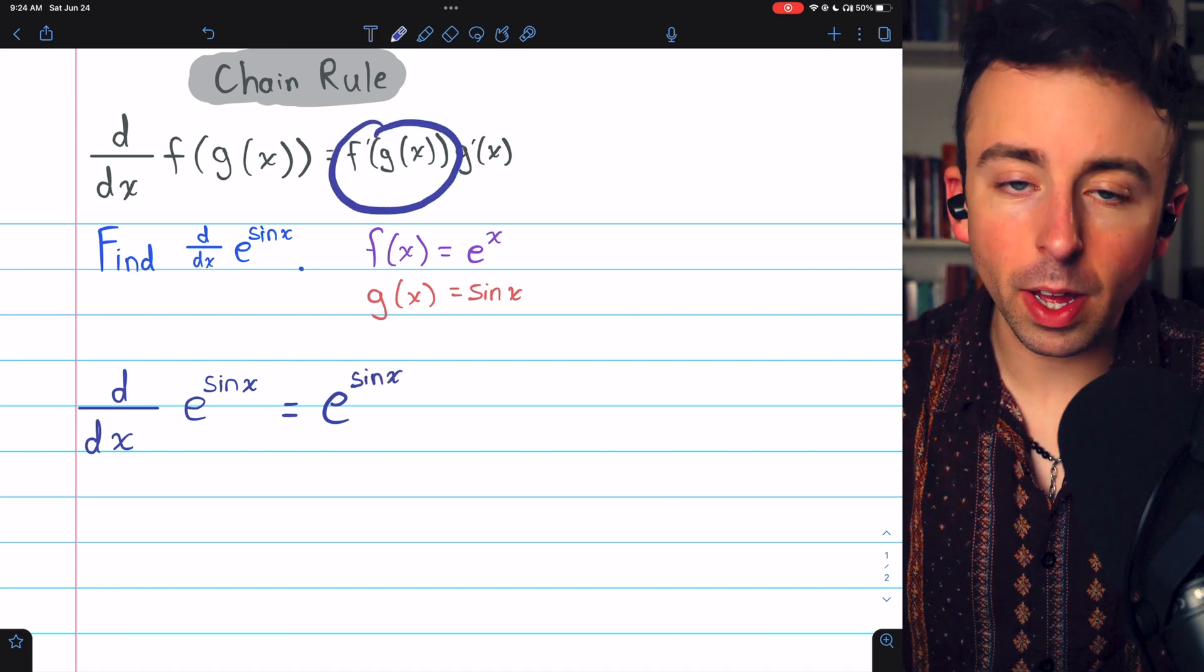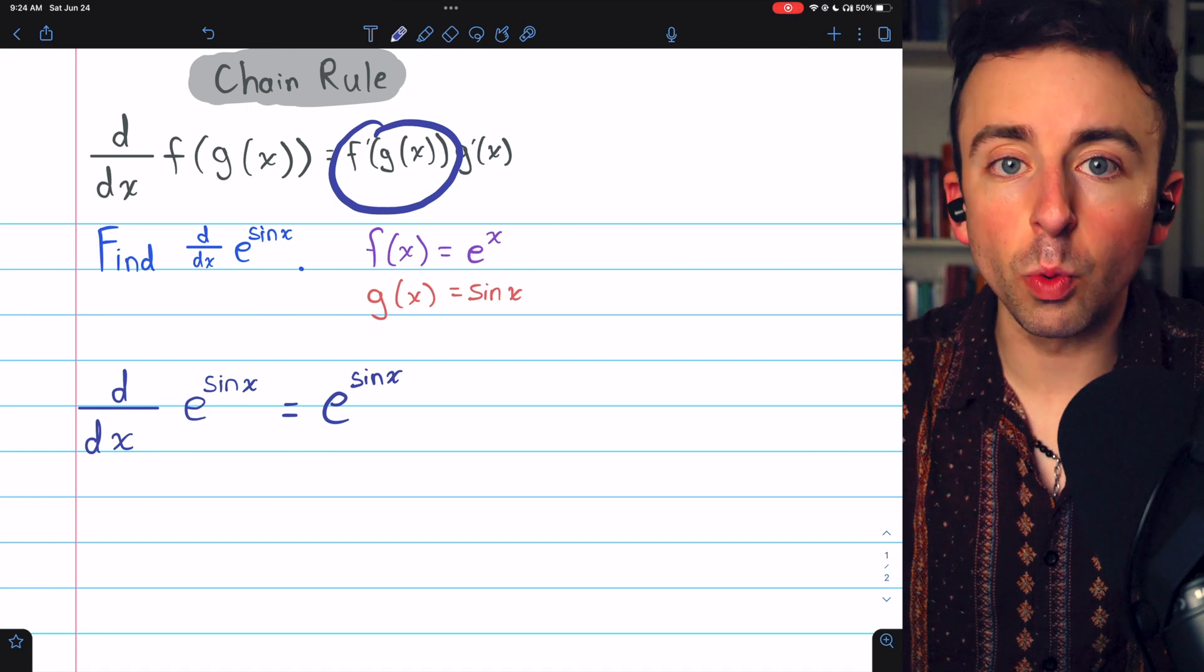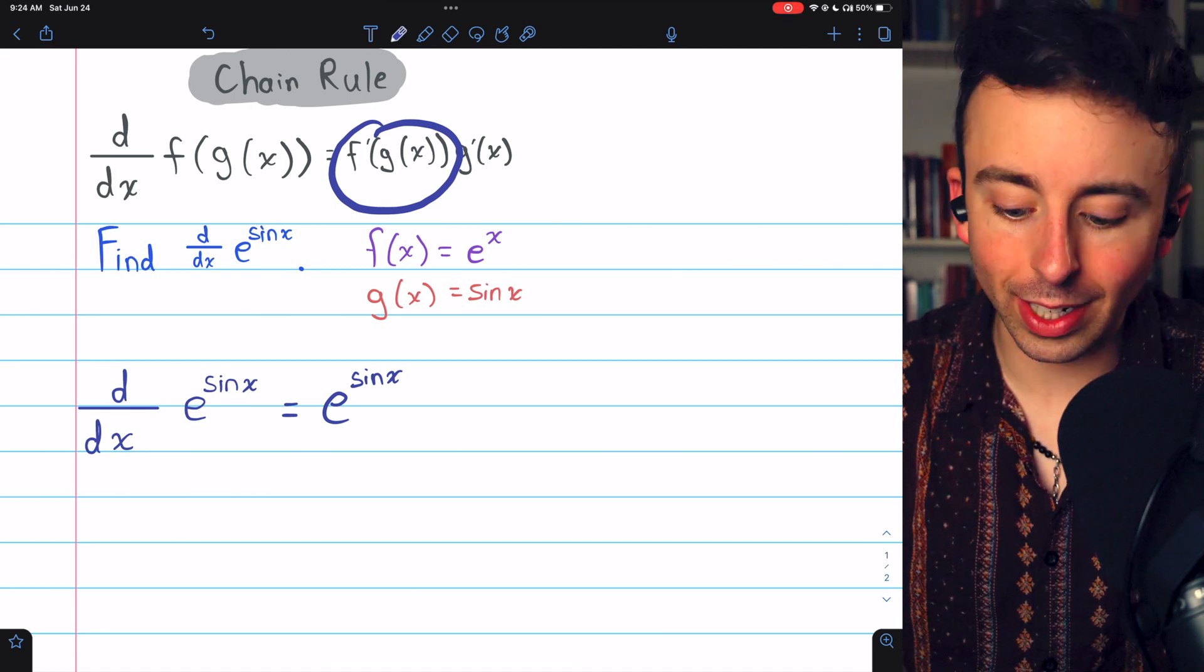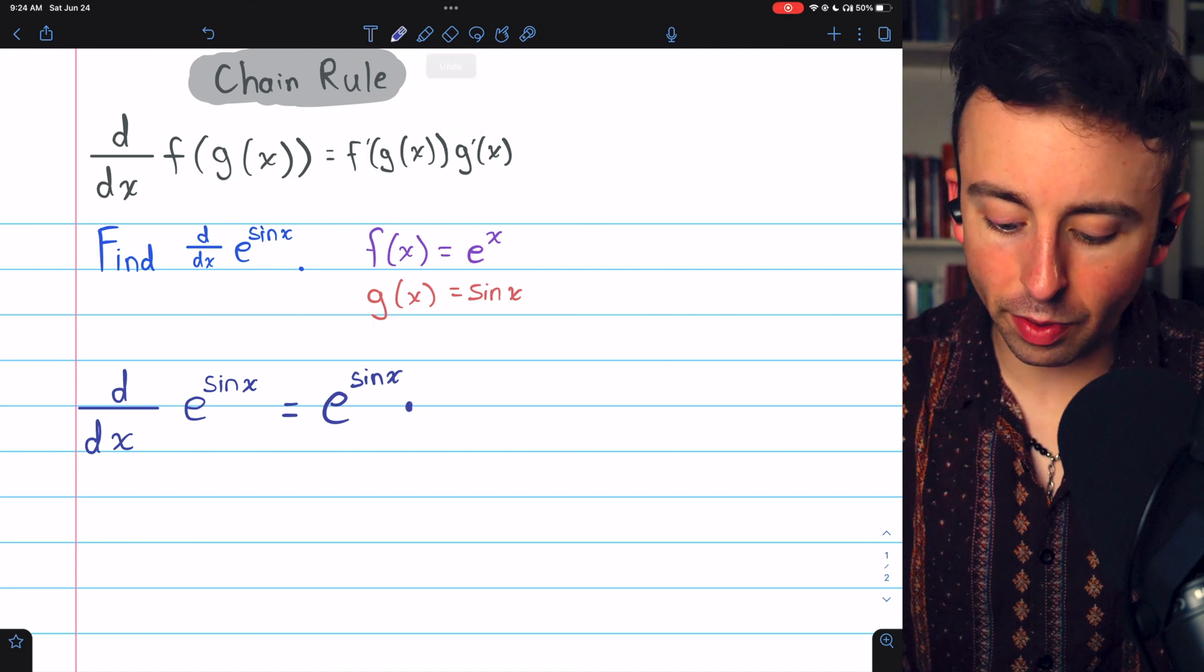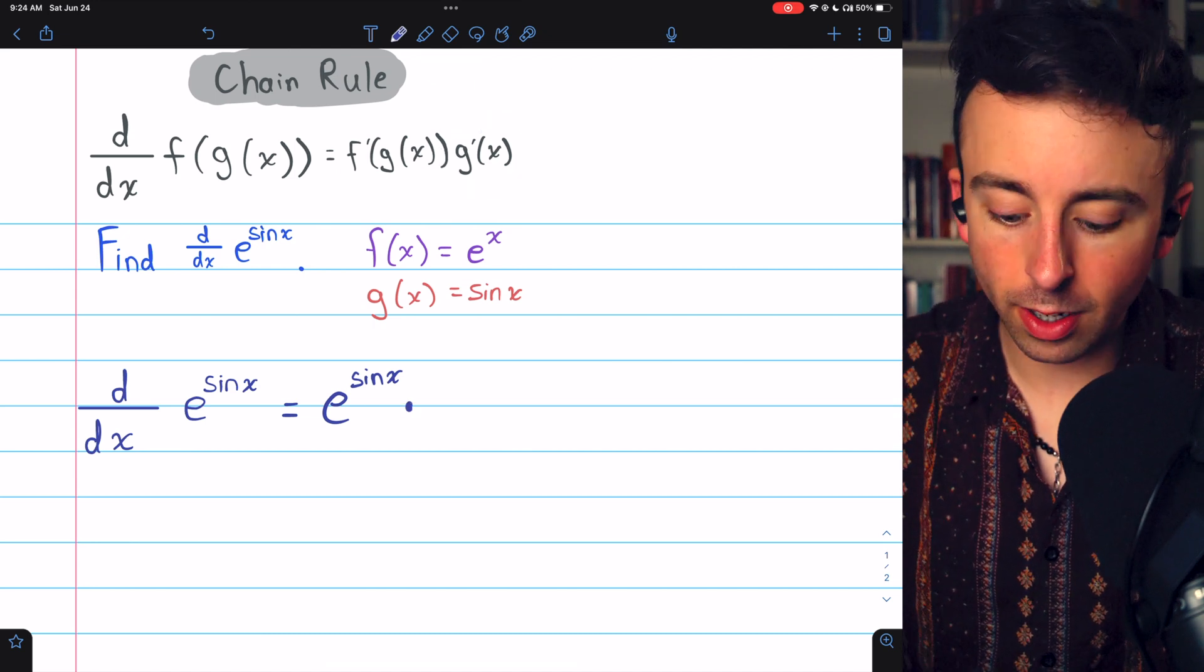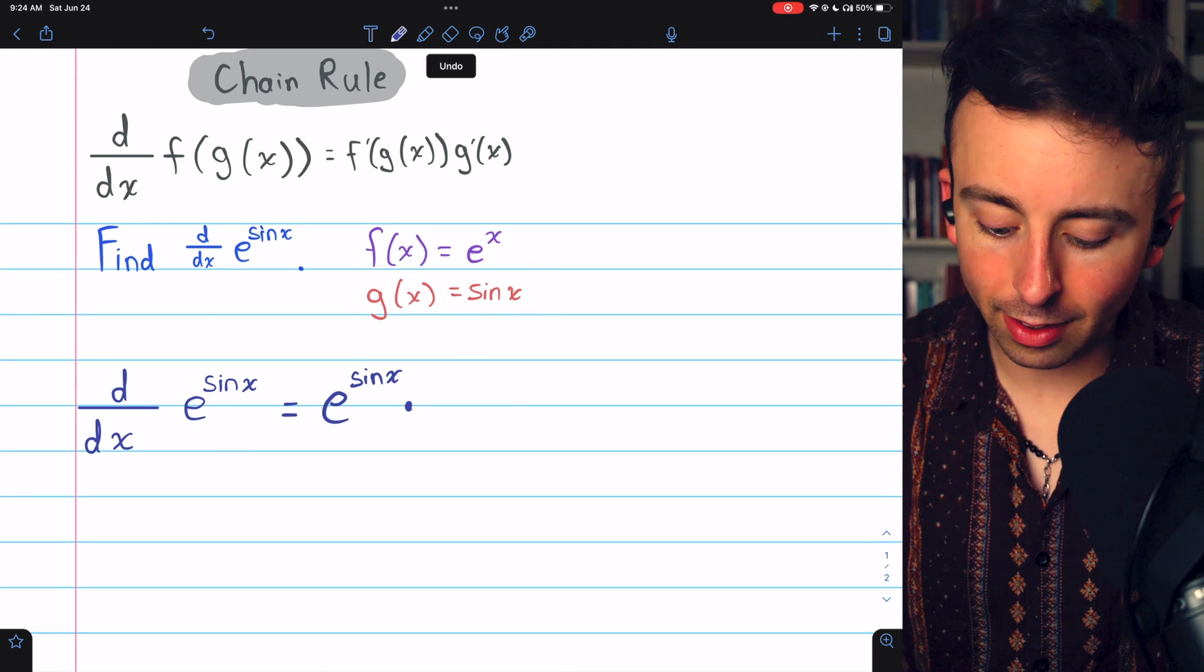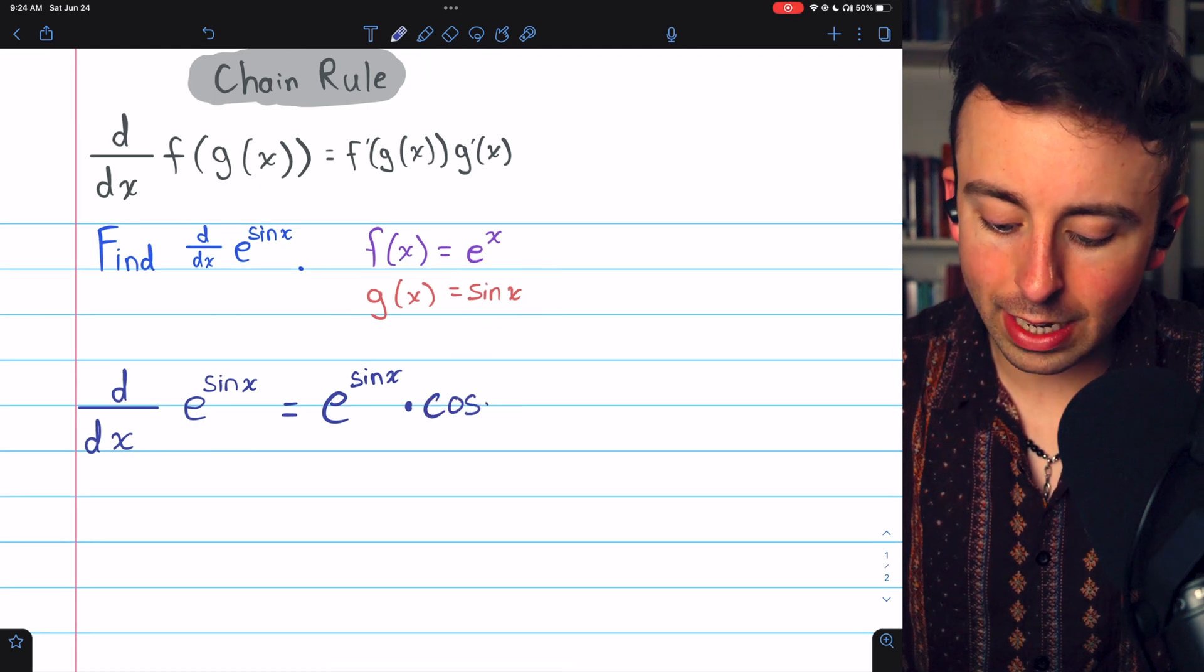That's f prime of g of x, the derivative of the outside evaluated at the inside. Then we just multiply by g prime, the derivative of the inside function. The inside function is sine x, and sine x's derivative is cosine x.